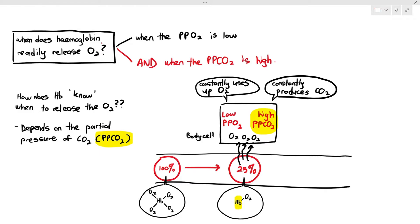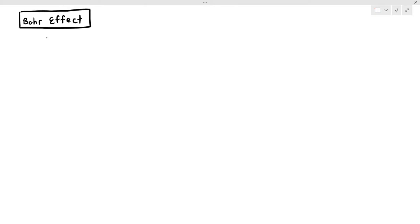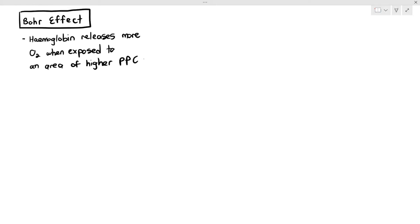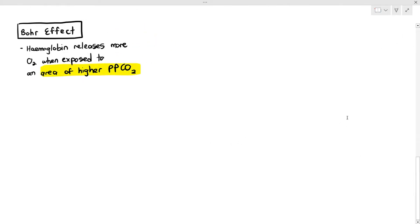This brings us to an important concept known as the Bohr effect. The Bohr effect is a concept or process discovered by scientist Christian Bohr, and he stated that hemoglobin releases more oxygen when exposed to an area of higher partial pressure of carbon dioxide.